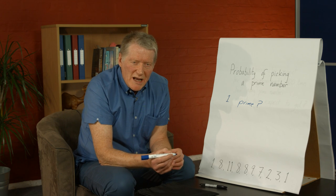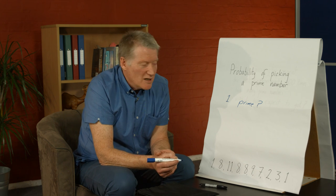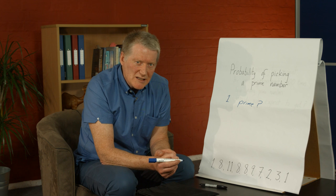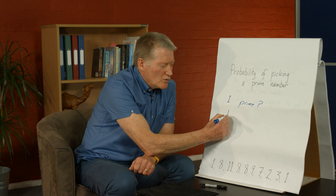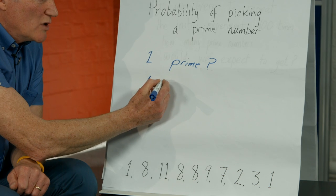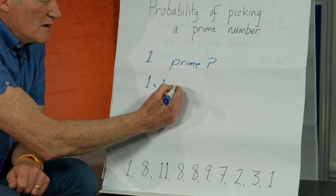Well, the only way to make 1 have two factors is to multiply it by itself. In other words, to go 1 times 1. That equals 1.